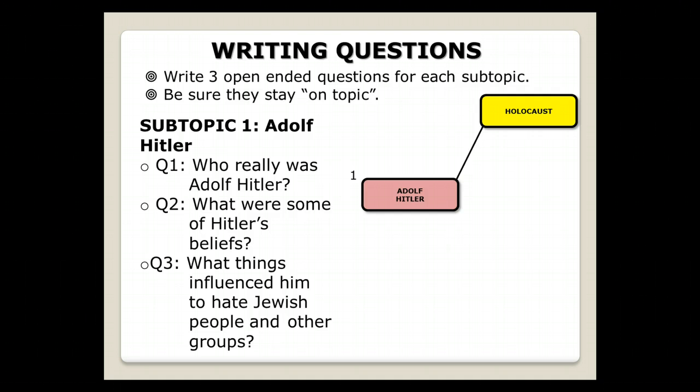Again, I'm not going to be looking for like when was he born, when did he die. I'm looking for, because my subtopic is focused on the Holocaust, I'm going to be looking for what were some of Hitler's beliefs, because that question is going to lead us into why he believed the Holocaust was necessary. And then, what things influenced him to hate Jewish people and other groups? That's an open-ended question that's going to lead us to information about the Holocaust. It's going to lead us to information about why he would choose to do something as horrible as this.